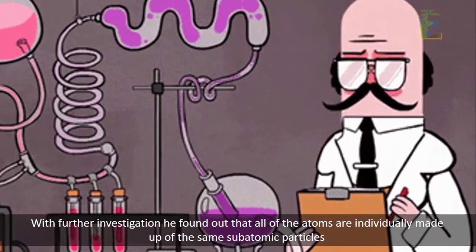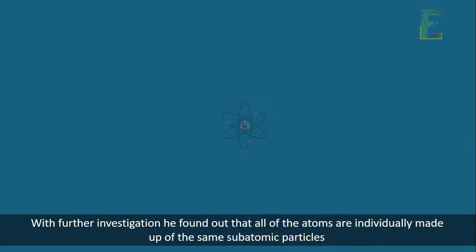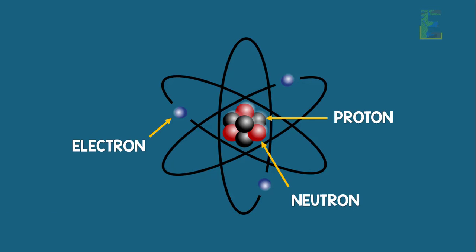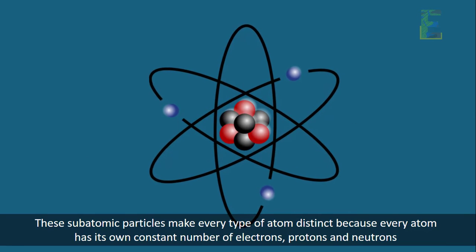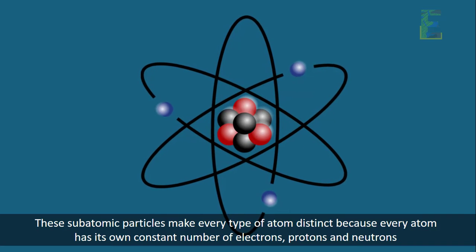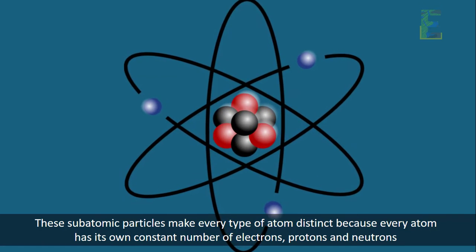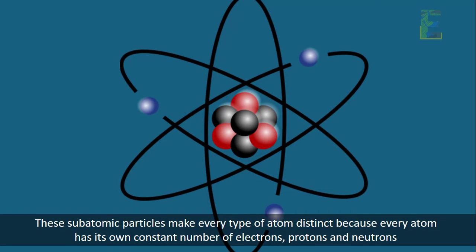With further investigation, he found out that all of the atoms are individually made up of the same subatomic particles, which are the electrons, protons, and neutrons. These subatomic particles make every type of atom distinct because every atom has its own constant number of electrons, protons, and neutrons.